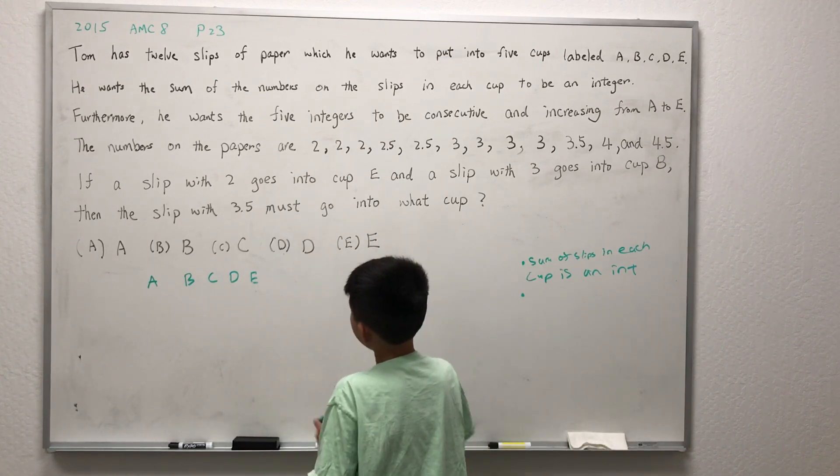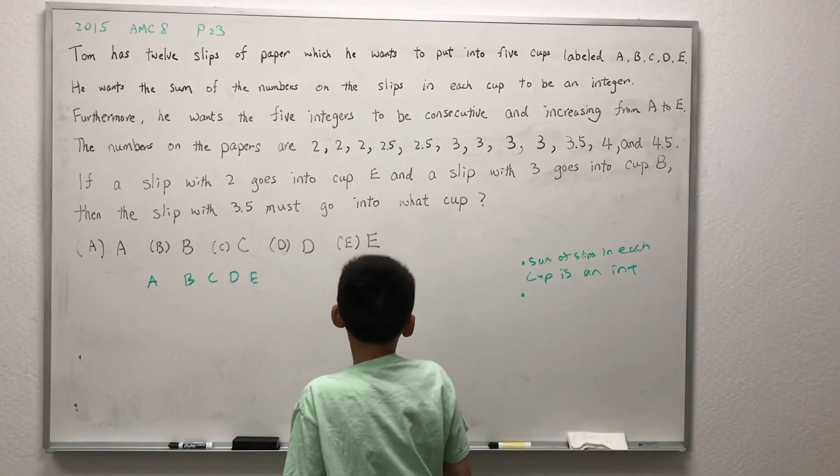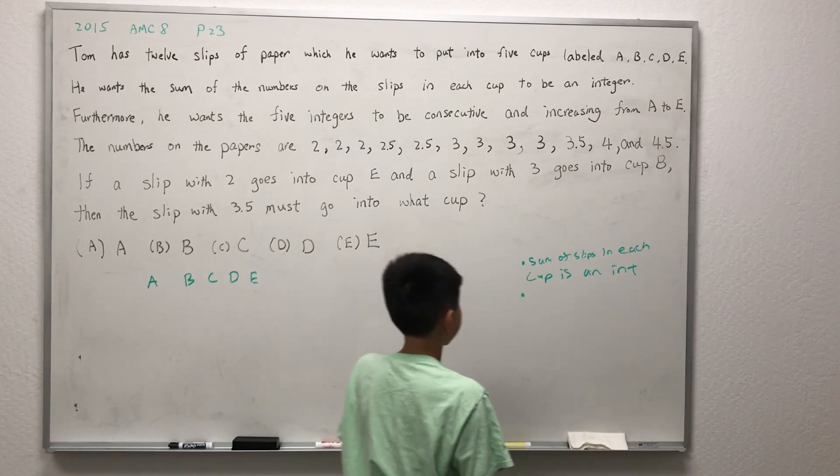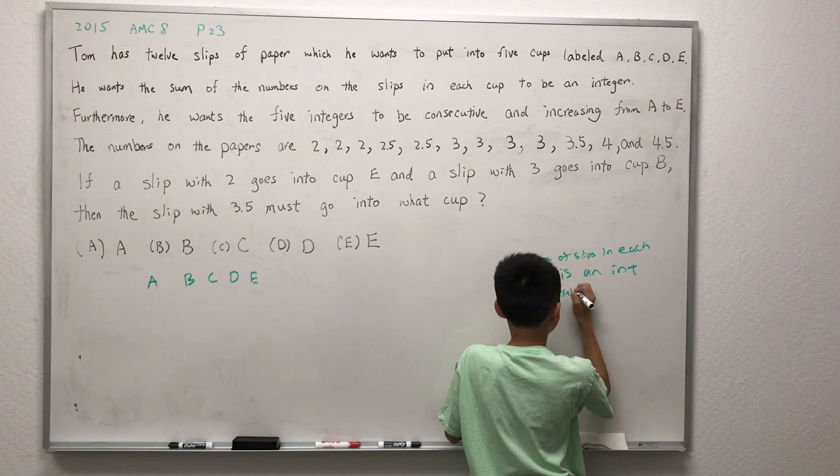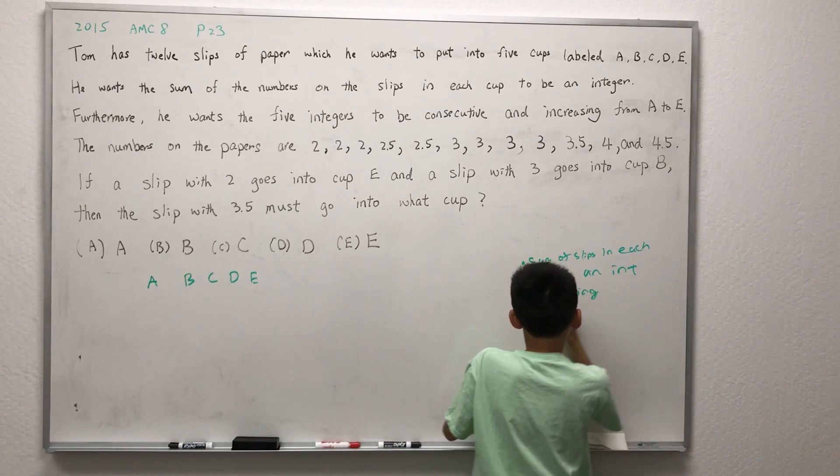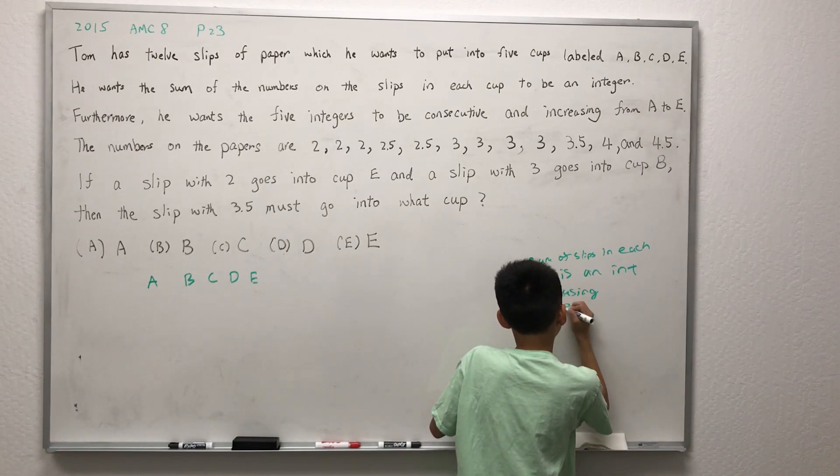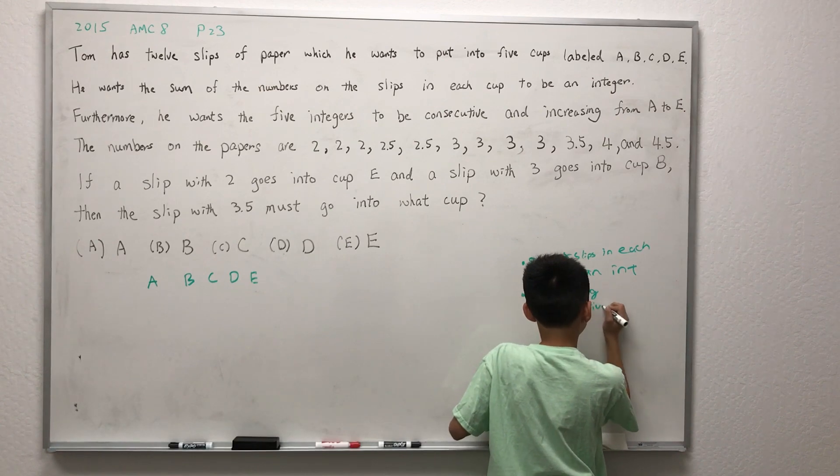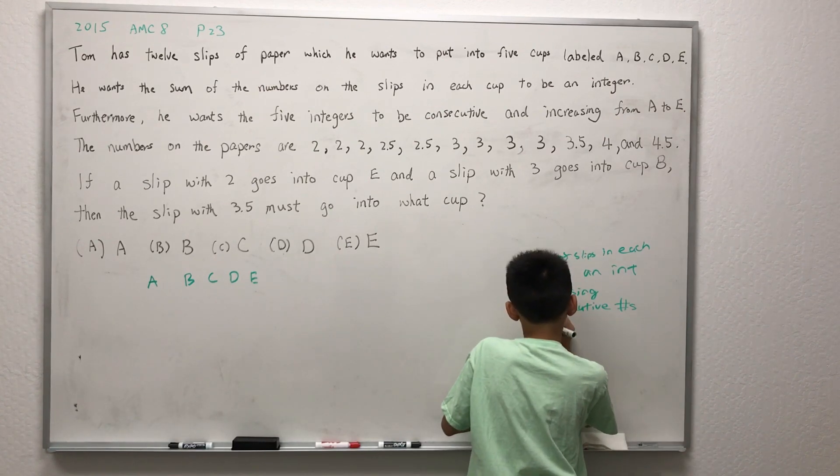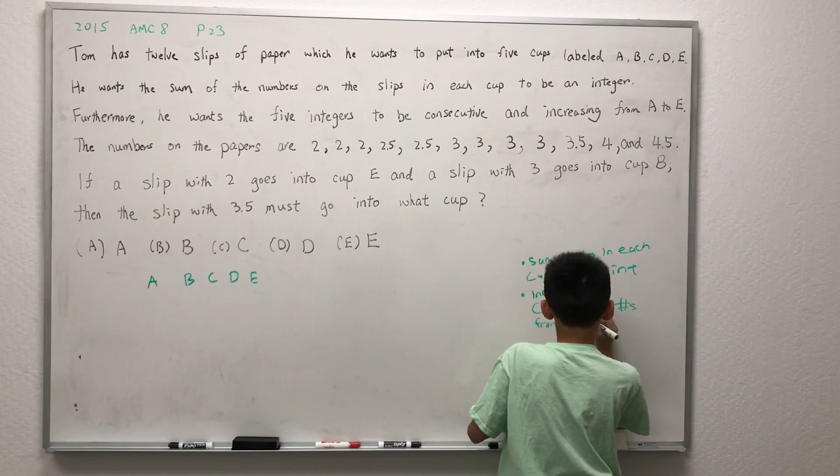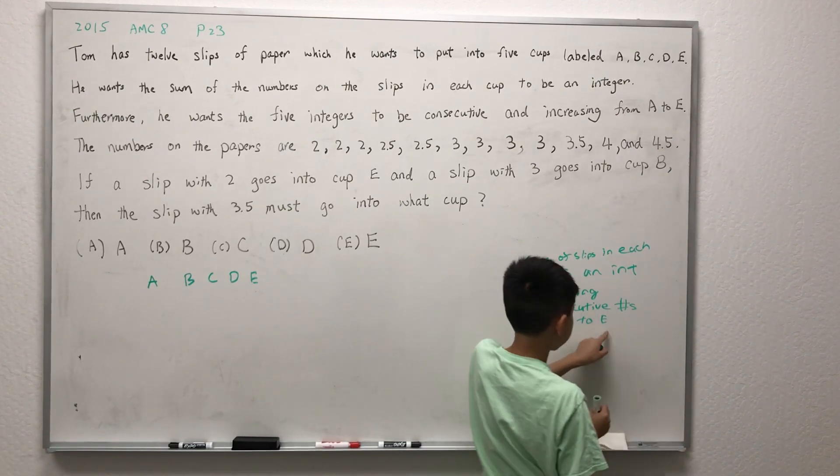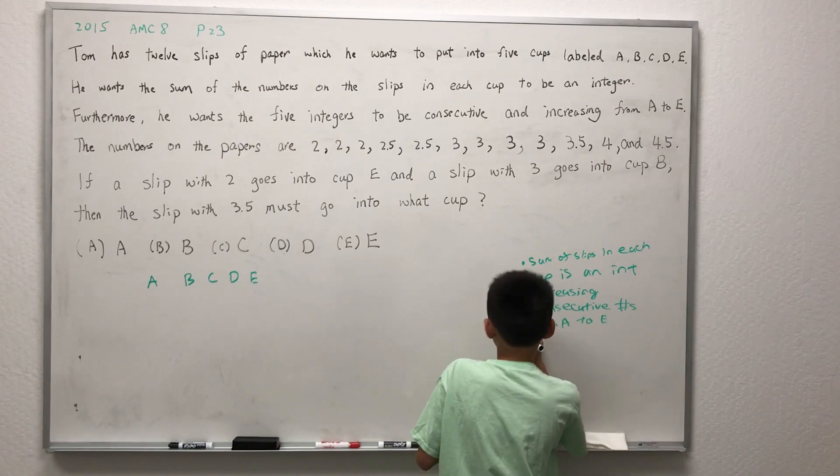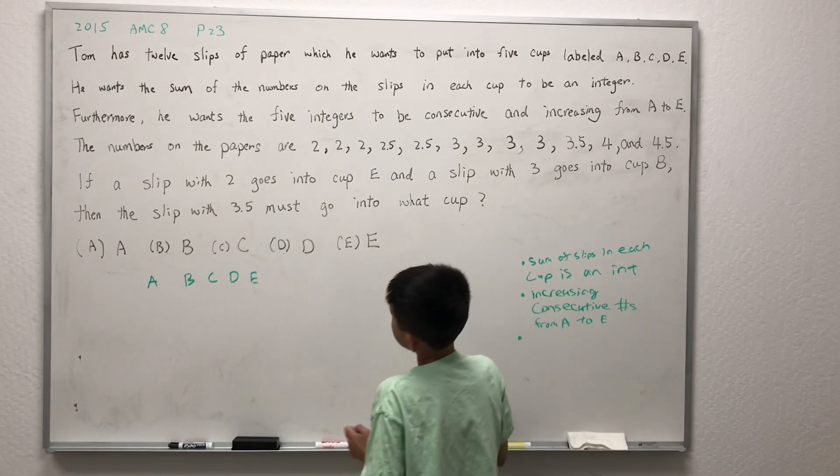The second criteria is that he wants the five integers to be consecutive and increasing from A to E. This means that A would be the smallest and E would be the biggest.